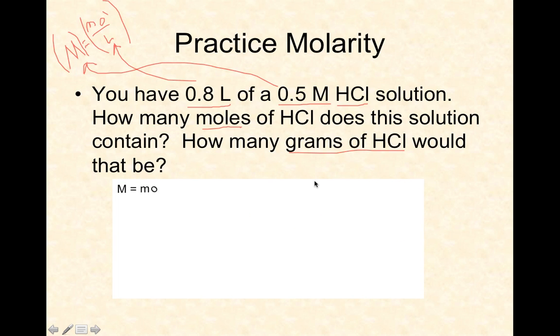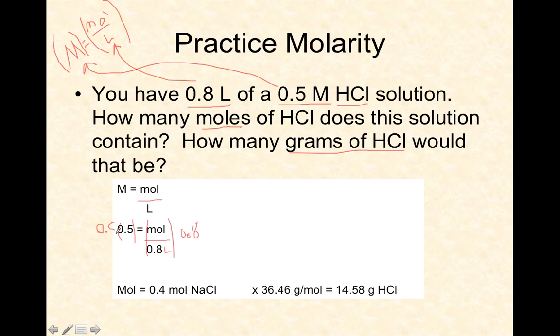Molarity equals moles per liter, right? So they put 0.5 molar equals moles we don't know divided by 0.8 liters. Then they multiplied both sides by 0.8 and by 0.8. That crosses out there, that crosses out there, and you've got your moles at 0.4. So first part of the question done.